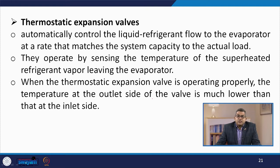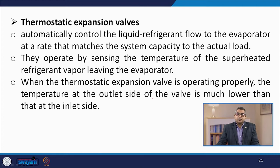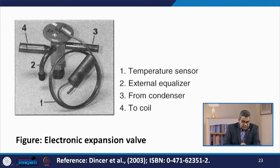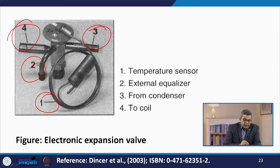Let us talk about thermostatic expansion valves. They are basically automatic type, automatically controlling the liquid refrigerant flow to the evaporator at a rate that matches the system capacity to the actual load. They operate by sensing the temperature of superheated refrigerant vapor leaving the evaporator. When the thermostatic expansion valve is operating properly, the temperature at the outlet side of the valve is much lower than at the inlet side. If this temperature difference does not exist when the system is in operation, the valve seat is probably dirty and clogged with foreign matter. Here you see an electronic expansion valve with the temperature sensor and external equalizer; the inlet line comes from the condenser and this line goes to the coil.